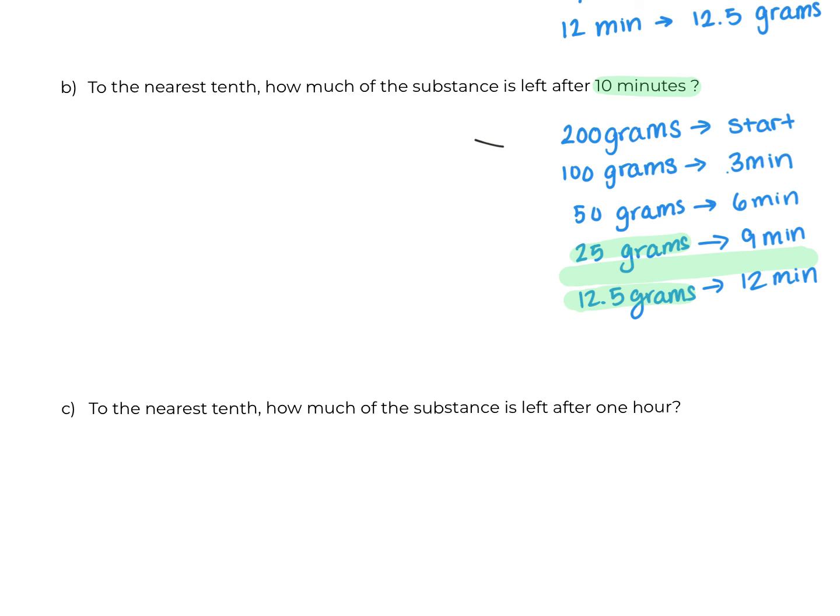Let's use the formula and plug in and see if we get that. So A equals P times 0.5 to the t over H. My starting value is still 200. The time this time is 10 minutes. The half-life hasn't changed. That's still three.